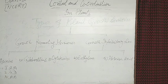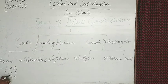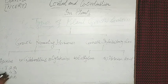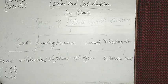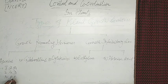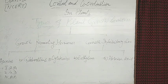IAA stands for indole acetic acid. The second artificial auxin is 2,4-D, and the third is NAA, which stands for naphthalene acetic acid.